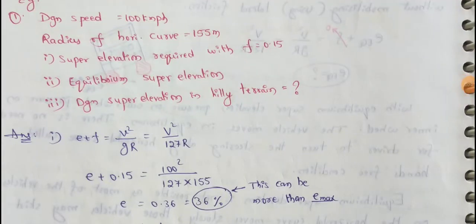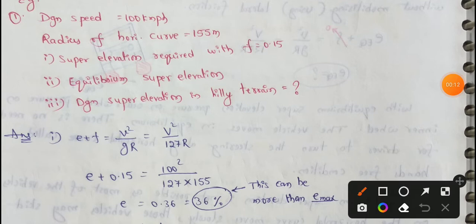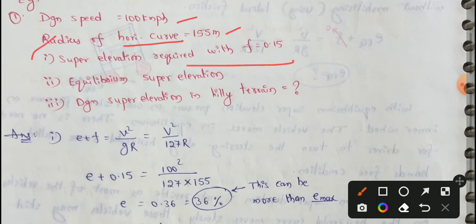Next topic: Design Super Elevation based changes. We will discuss example problems. First one: Design speed is 100 kilometers per hour, horizontal curve radius is 155 meters. We need to find the super elevation required with friction 0.15, equilibrium super elevation, and design super elevation in hilly terrain.